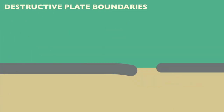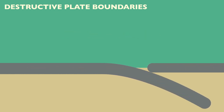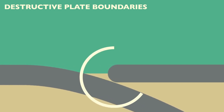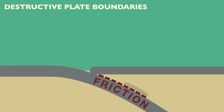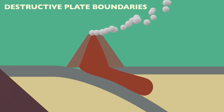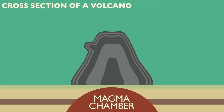At destructive plate boundaries, tectonic plates converge. As the plates meet, one plate is pushed underneath the other, lighter plate. The point at which one plate is forced beneath the other is called the subduction zone. Friction causes the plate to melt, becoming molten magma. The magma then forces its way up the side of the plate boundary to form a volcano. One of the key features of a volcano is the magma chamber, from which magma rises through the pipe or central vent to the surface, forming lava.